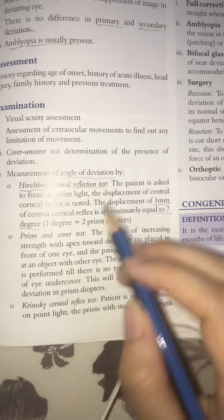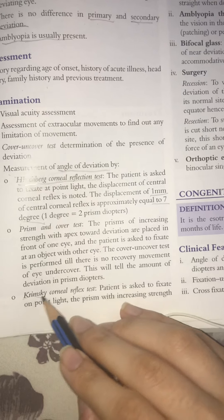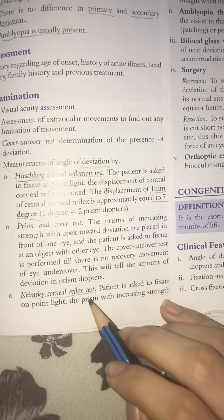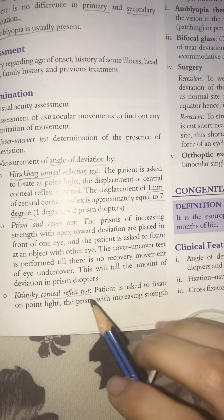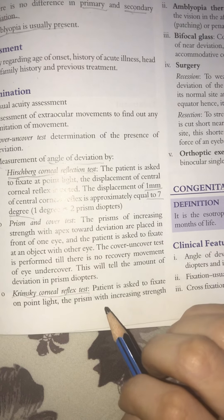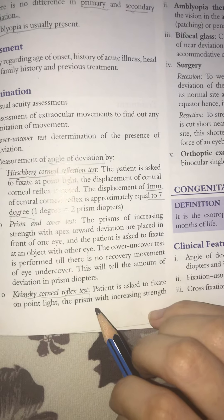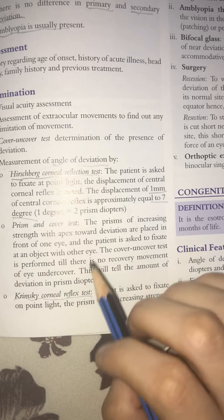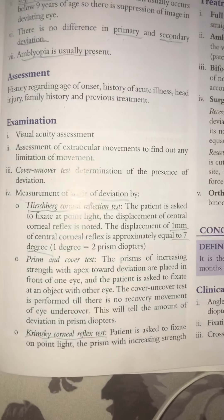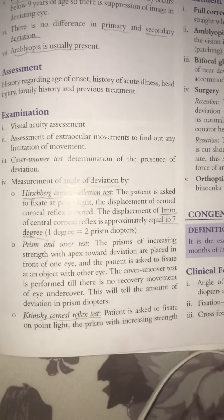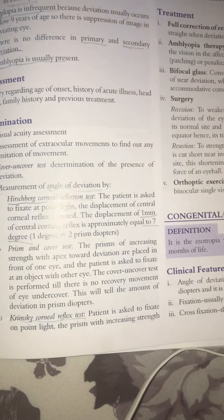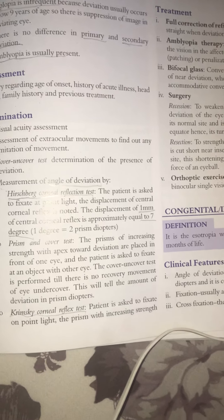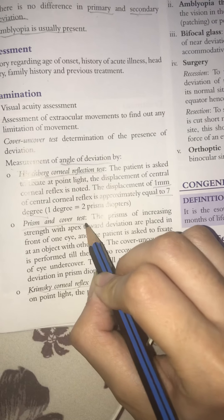The next test is the Krimsky Corneal Reflex Test. The patient fixes with the normal eye, then we place a prism on the normal eye and assess the corneal reflex. There is also the Prism and Cover Test.